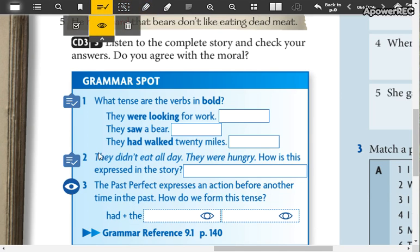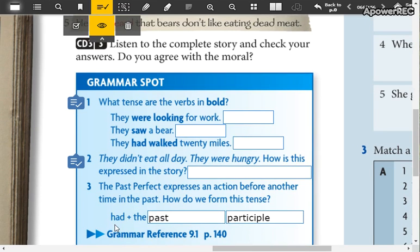Recuerden que el past perfect es el pasado del otro pasado, entonces had plus the past participle. Recuerden que después de had siempre ponemos el verbo en participio, siempre en participio.